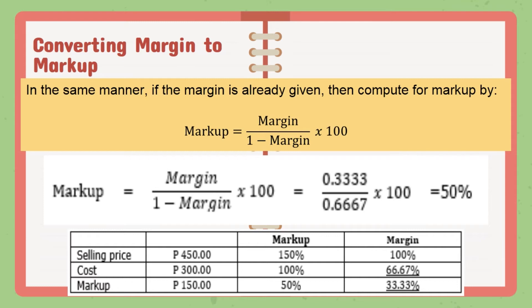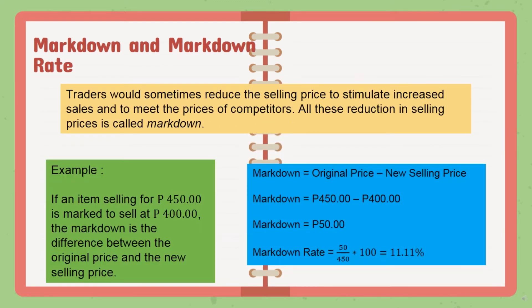The bottom line is: when the base is cost, the selling price can go higher than 100%, while if the selling price is the base, the percentage value will be smaller — that's the idea when margin is being discussed. Now let us go to the markdown.